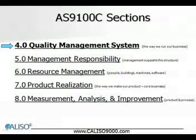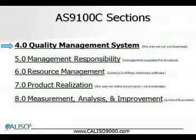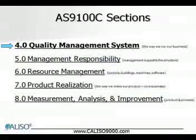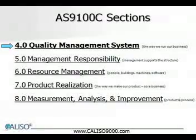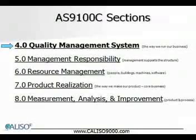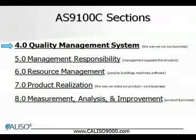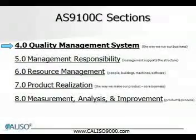Section 4 is where the requirements begin. Section 4 is titled Quality Management System. A quality management system is the organizational structure, procedures, processes, and resources that are needed to implement quality management. Think of a quality management system as a business management system, or simply the way you run your business. Although there are a few additional requirements to the ISO 9001 standard in Section 4, they're pretty minor in nature and do not require significant effort to implement.